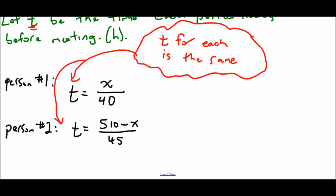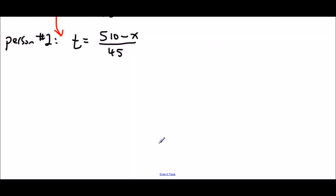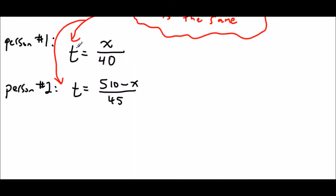And because they're the same, I can substitute them for each other. So if time equals X over 40, and the same time is 510 minus X over 45, then these two must also be equal. And that's why I'm creating my equation that will help me solve for my variables. So the time it takes the first person must be the same as the time it takes the second person. And now I have a single equation with one unknown, and that unknown is X.